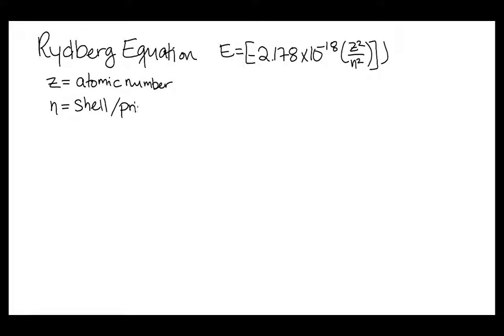So to do this, we will use the Rydberg equation, which states that the energy of a shell is equal to the Rydberg constant times z squared, where z is the atomic number of the atom, divided by n squared, where n is the shell of the orbital, or the principal quantum number.